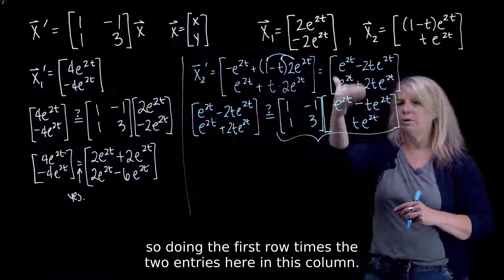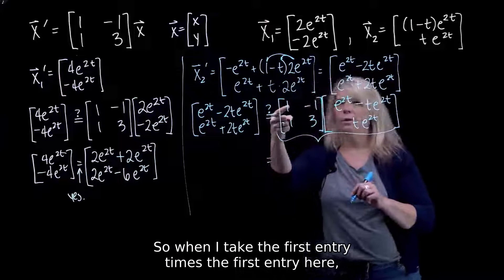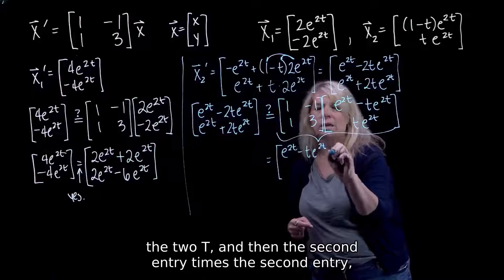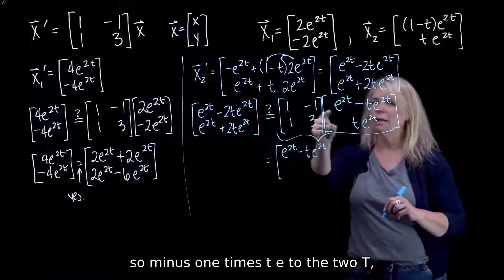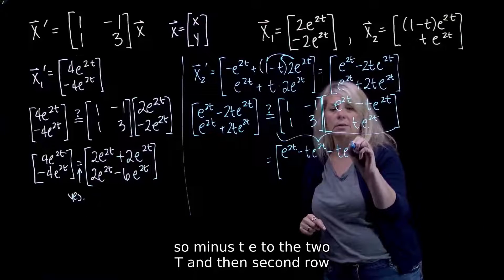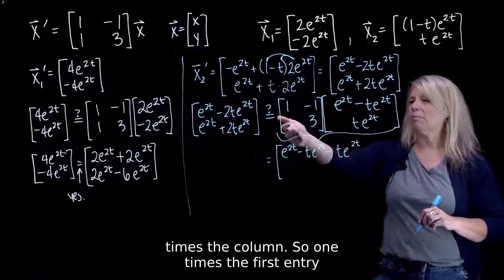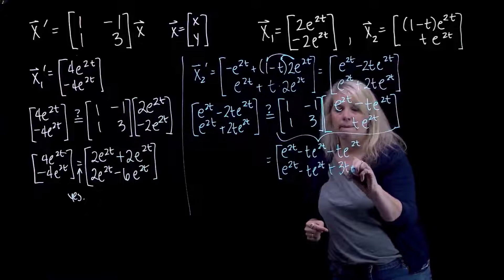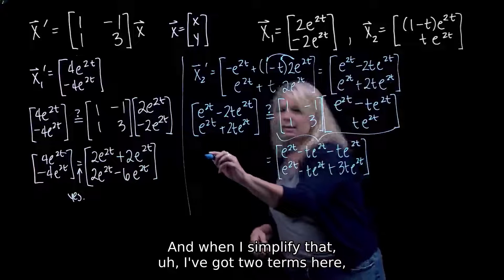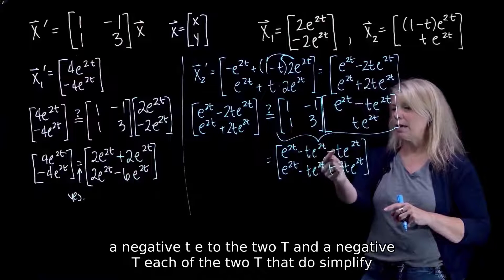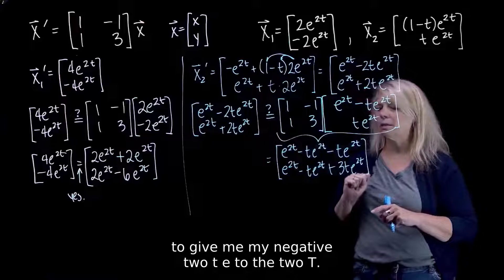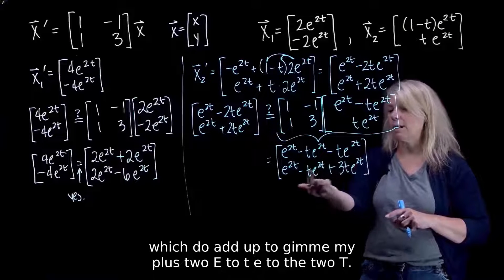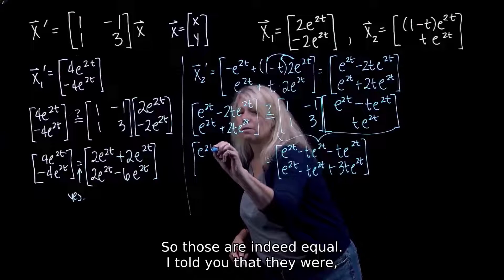First row times the column: 1 times (e to the 2t minus t e to the 2t) gives e to the 2t minus t e to the 2t, then minus 1 times t e to the 2t gives minus t e to the 2t. Second row times the column: 1 times the first entry plus 3 times the second entry. When I simplify, the two negative t e to the 2t terms combine to give negative 2t e to the 2t. In the second entry, minus 1 times t e to the 2t plus 3t e to the 2t adds up to plus 2t e to the 2t. So those are indeed equal.